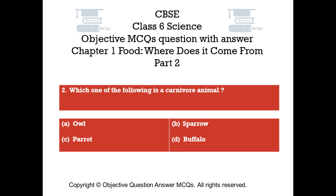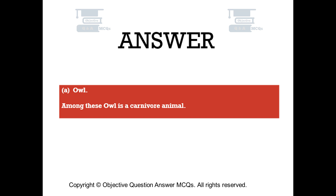Question number 2. Which one of the following is a carnivore animal? Option A: Owl. Option B: Sparrow. Option C: Parrot. Option D: Buffalo. The right answer is Option A. Among these, owl is a carnivore animal.